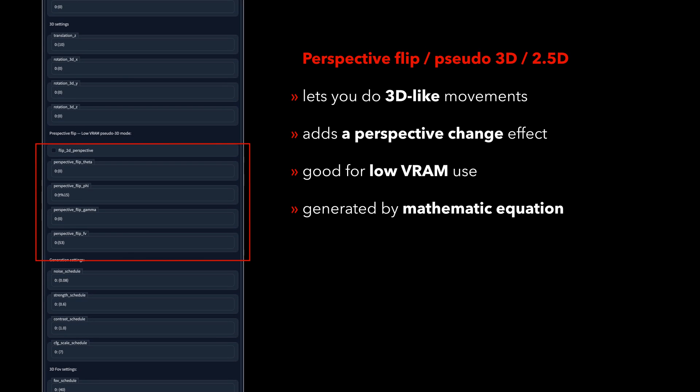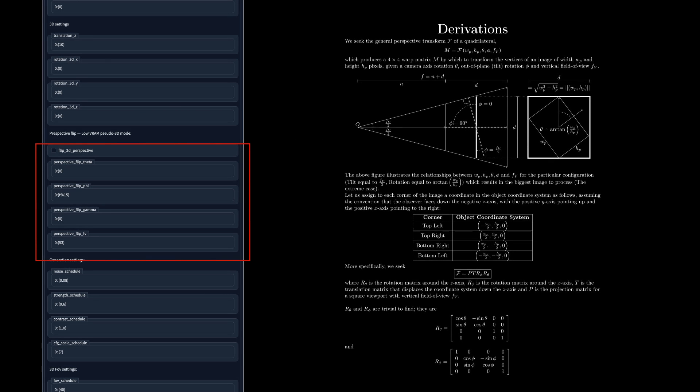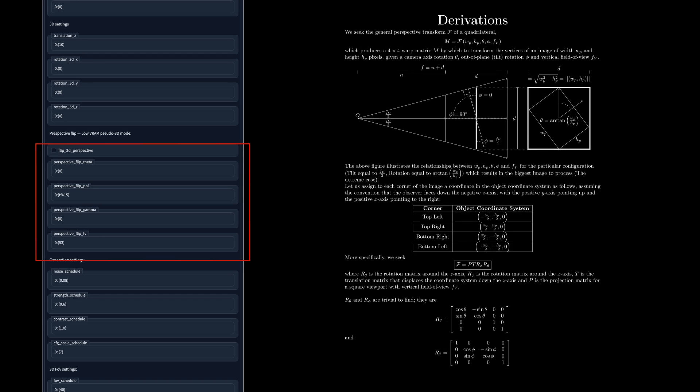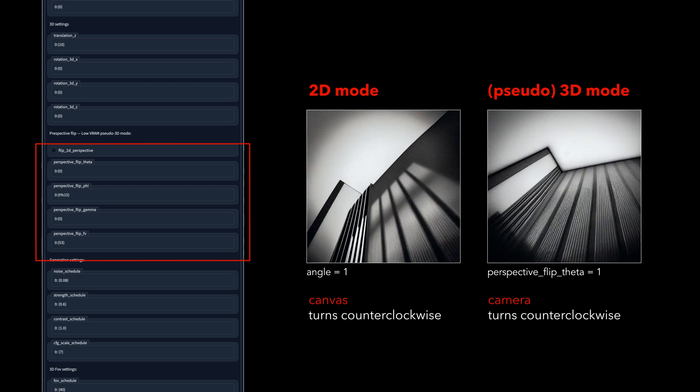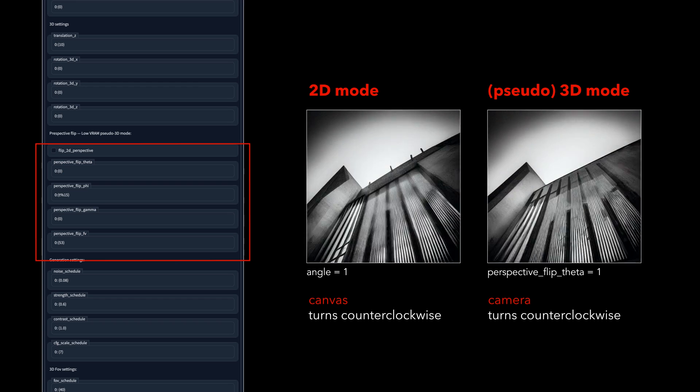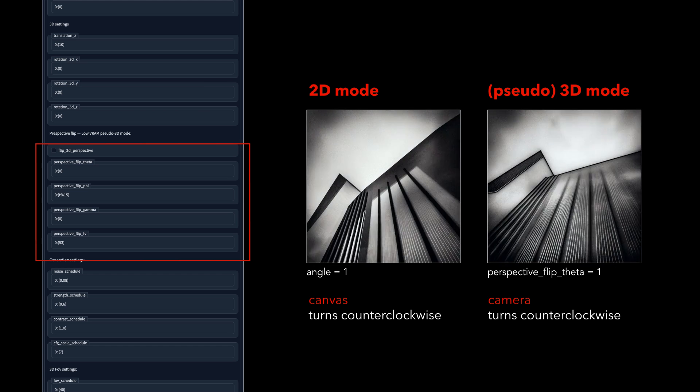Since the last update of Deform to version 0.5, four more 2D parameters were added, which will simulate a pseudo-3D effect by flipping the perspective. The values are influenced by a mathematic equation and you can check out the link in the description if you want to get deeper into this topic. The entered values can be seen here as a camera movement and not a canvas movement, meaning that the positive and negative values have the opposite effects from the previous 2D parameters, as you will see in the examples.